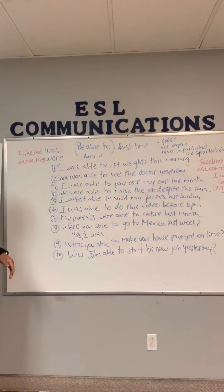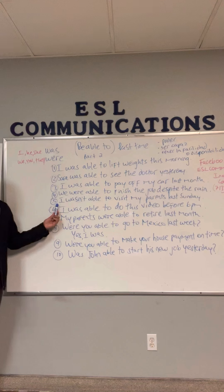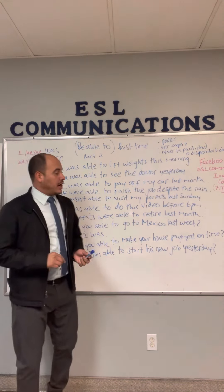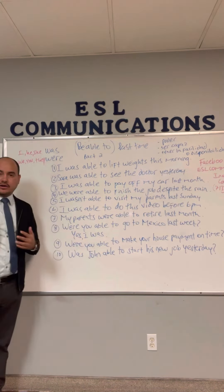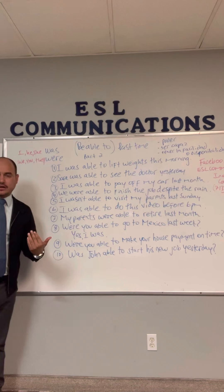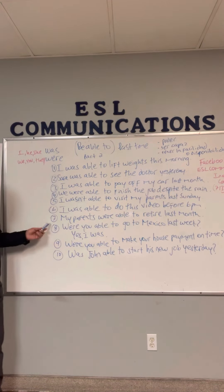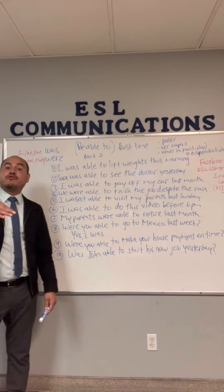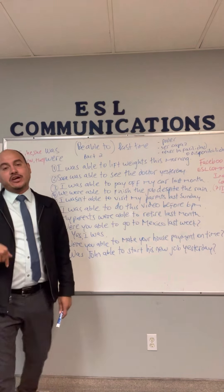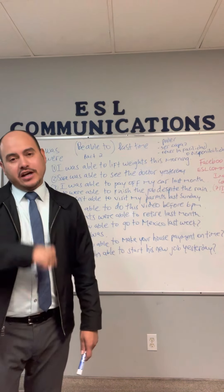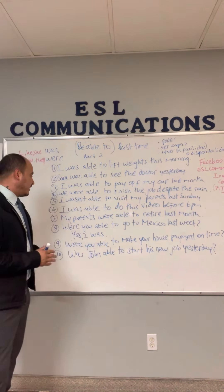Example number five — negative: I wasn't able to visit my parents last Sunday. No pude visitar a mis padres el domingo pasado. Example number six: I was able to do this video before 6 pm. Pude hacer este video antes de las seis de la tarde.